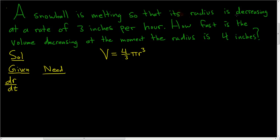We're told it's decreasing, so that means this should be negative. Instead of 3, we'll have negative 3. That's because the radius is decreasing, which makes sense. The snowball is melting.